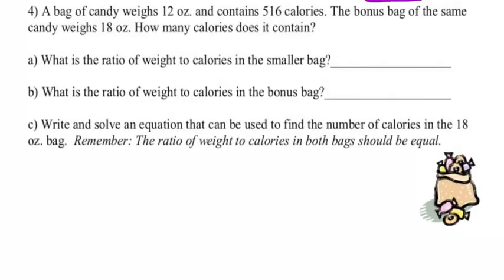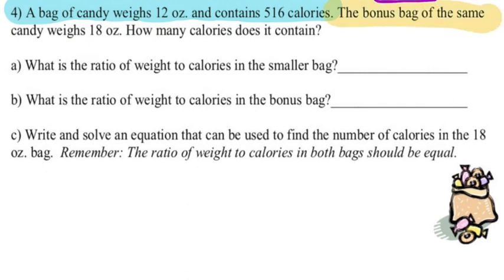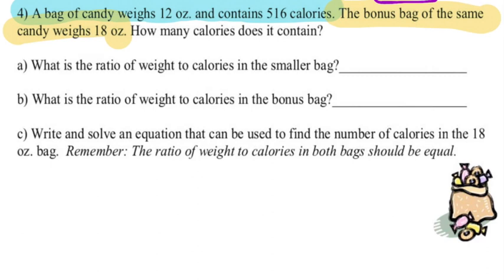The next few problems are going to be word problems. When we're doing a word problem, it's really important that you set up two ratios to make your proportion. In each of these ratios, we need to be careful to make sure that we keep the same units on top for each ratio and the same units on bottom for each ratio. So the word problem reads, a bag of candy weighs 12 ounces and contains 516 calories. The bonus bag of the same candy weighs 18 ounces. How many calories does it contain?